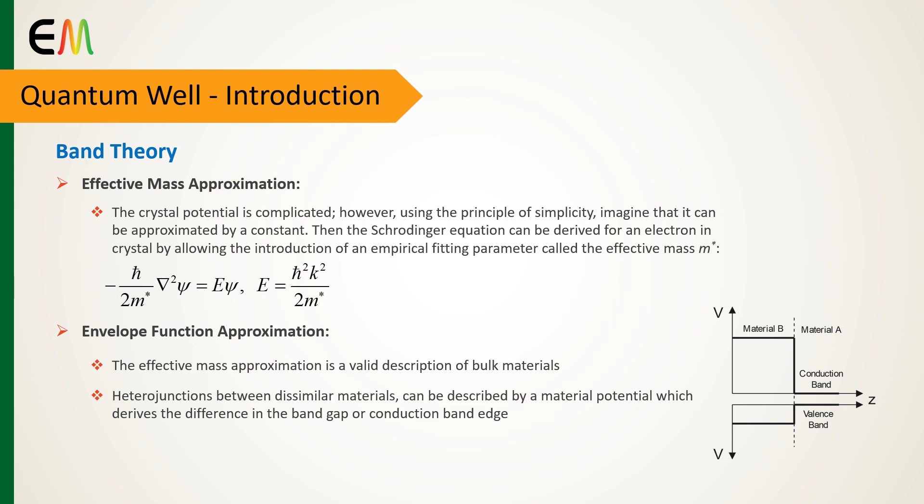Once this is accepted, the electronic structure can be represented by a simple one-dimensional Schrödinger equation. In this equation, V(z) represents the band discontinuities at the heterojunction.